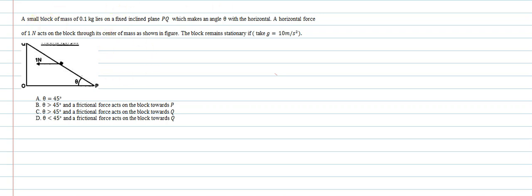A small block of mass 0.1 kg lies on a fixed inclined plane PQ which makes an angle theta with the horizontal. A horizontal force of 1 newton acts on the block through its center of mass. We have to determine under which conditions the block remains stationary. The inclined plane has a block of mass 0.1 kg with a force of 1 newton and angle of inclination theta.